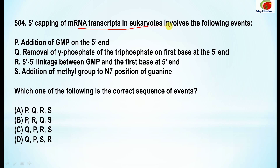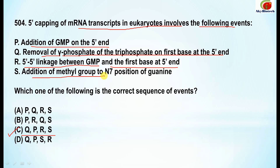Question 504: 5' capping of mRNA transcripts in eukaryotes involves the following events. The correct option is C. The sequence of events is: first, removal of the gamma phosphate of the triphosphate on the first base at the 5' end; then addition of GMP on the 5' end; then formation of 5' to 5' linkage between the GMP and the first base; and finally addition of a methyl group to the N7 position of guanine.